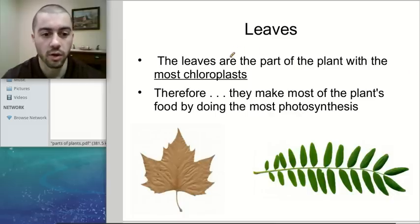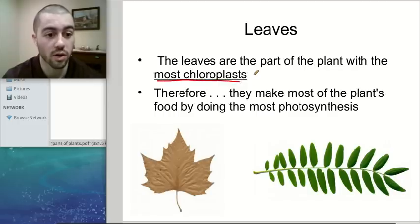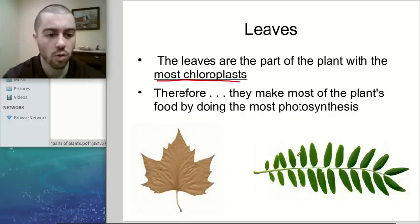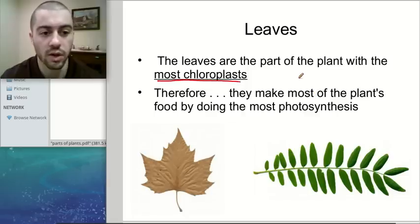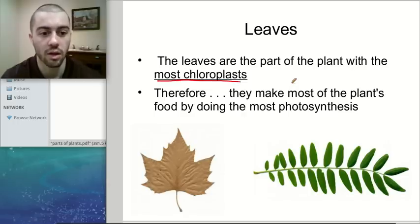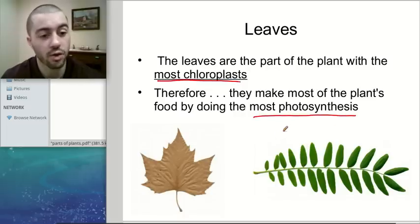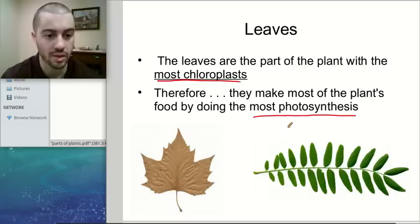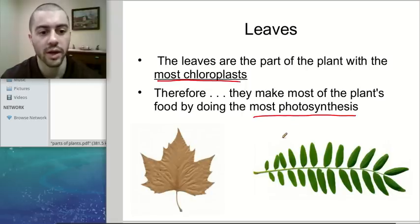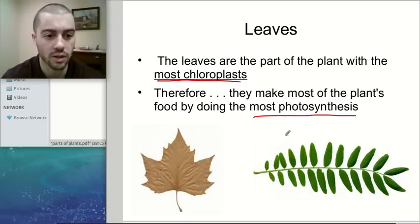Next: leaves. Leaves have a couple of important functions, but their main function is photosynthesis. Leaves are the part of the plant that have the most chloroplasts. Chloroplasts are what causes that green color in many plants. The chloroplasts in the leaves enable photosynthesis because they absorb sunlight and allow it to drive the photosynthesis reaction. Because the leaves have the most chloroplasts, they're going to be doing most of the photosynthesis for a plant.